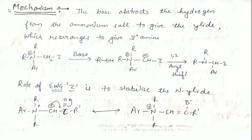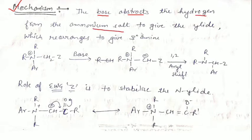Now we will discuss about its mechanism — the mechanism of Stevens rearrangement. Stevens rearrangement mein kya tha: quaternary ammonium salt liya tha humne, base ki presence mein convert ho gaya tha tertiary amine mein. Ab hum padhenge ki quaternary ammonium salt kis path se convert hota hai tertiary amine mein. First of all, base abstracts a hydrogen from the ammonium salt to give a ylide — here a nitrogen ylide. This nitrogen ylide then rearranges itself to give tertiary amine.